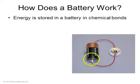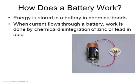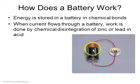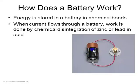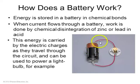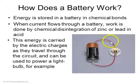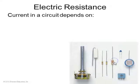How does a battery work? Energy is stored inside a battery in chemical bonds. When current is flowing through the battery, it disintegrates zinc or lead in acid, and that adds energy to the current. That current has some number of joules per coulomb in it, which get used up in a resistor like a light bulb.